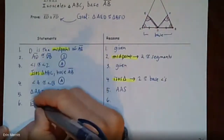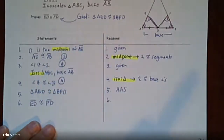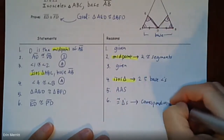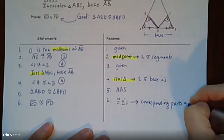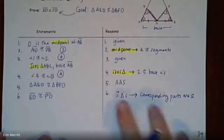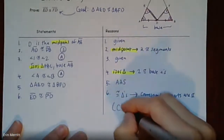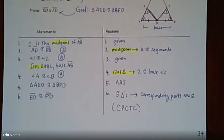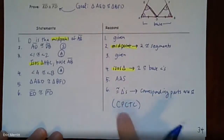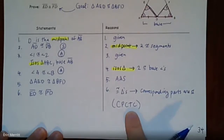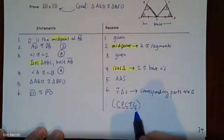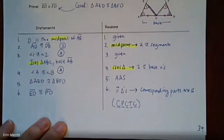Now that the triangles are congruent, we can state what we aimed to prove: ED is congruent to FD, because congruent triangles imply that corresponding parts are congruent. Each time the reason was written slightly differently, but that's okay — what matters is the reasoning behind it. If it's confusing, just use CPCTC every time — it works. Make sure you get the order of letters correct and know what CPCTC stands for: corresponding parts of congruent triangles are congruent.